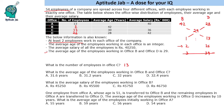What is the average age of employees working in offices B and C? We calculate: 42 × 2 plus 30 × 13, which is 84 plus 390 = 474. Dividing by 15 gives 31.6 years.